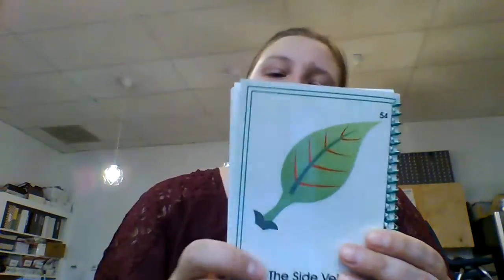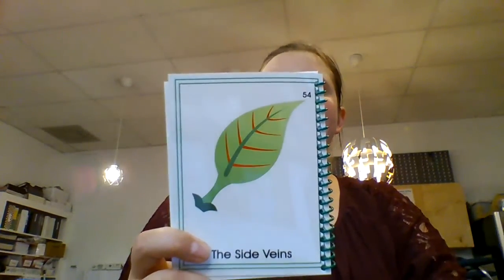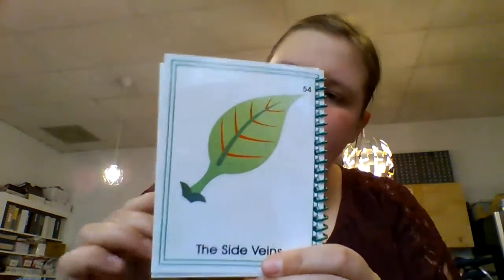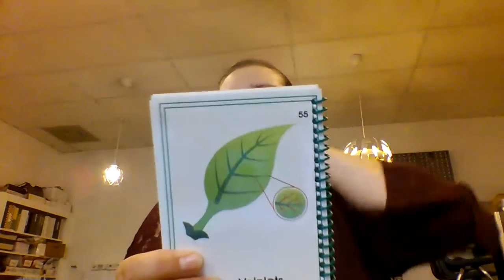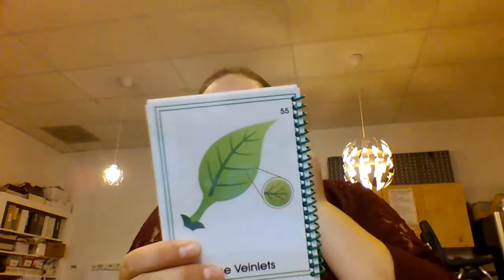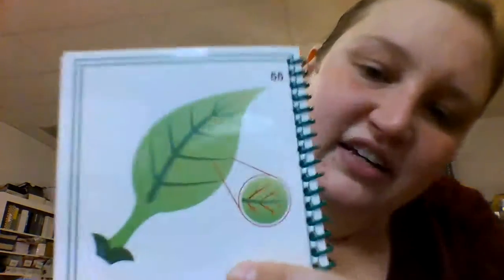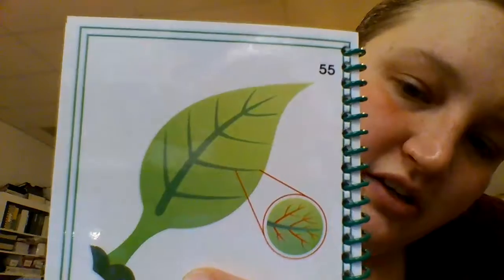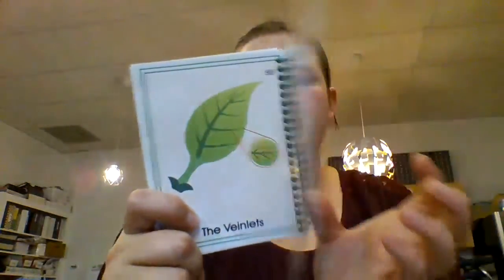Now we have side veins. The side veins of the blade grow from the main veins. The side veins are smaller. Next we have veinlets — the small veins throughout the blade. The veinlets are connected to the main veins and the side veins. Here's a close-up picture of what the veinlets are — they're small.